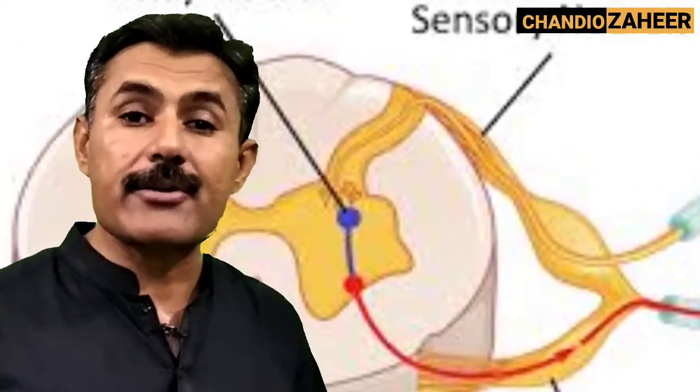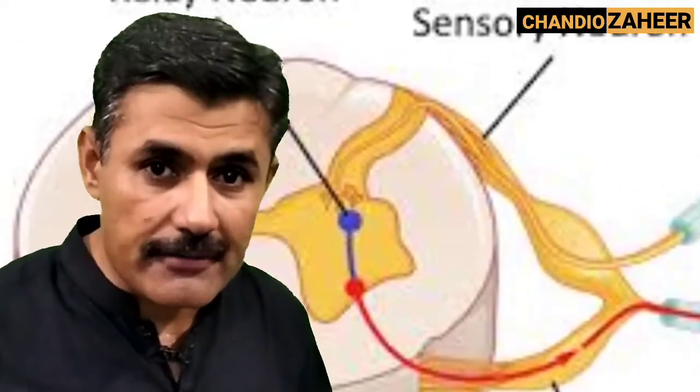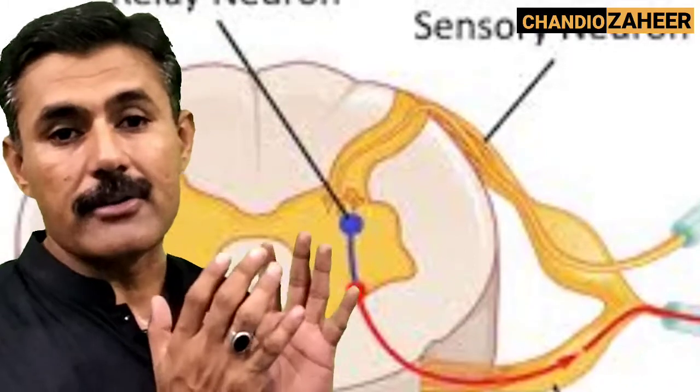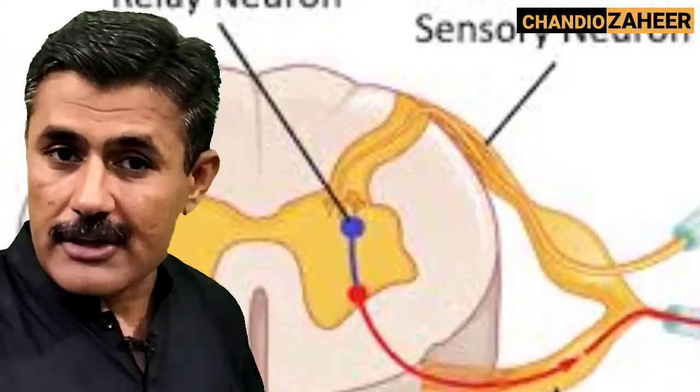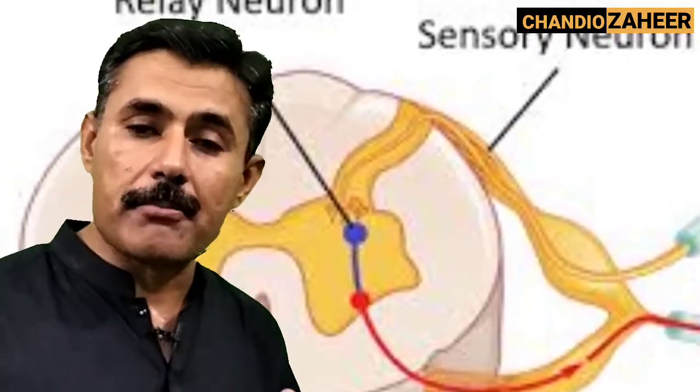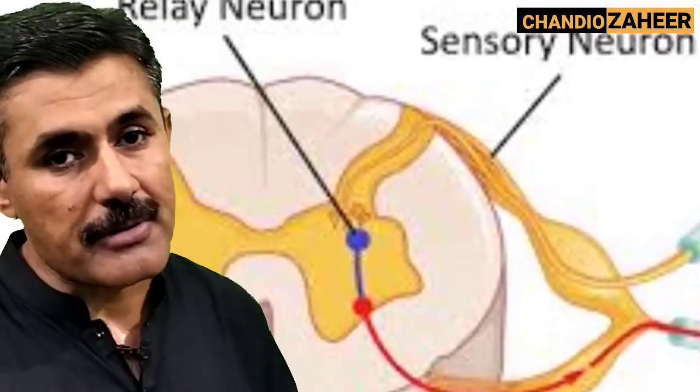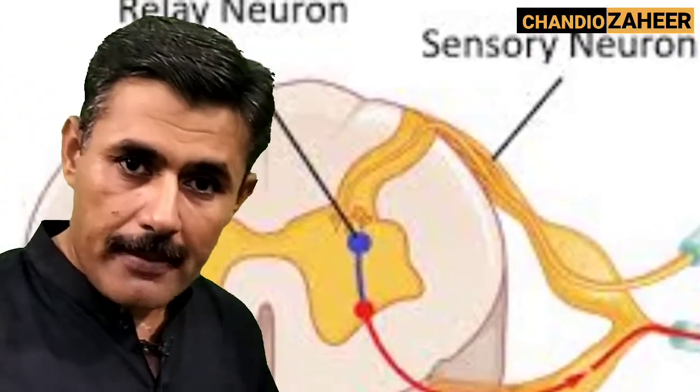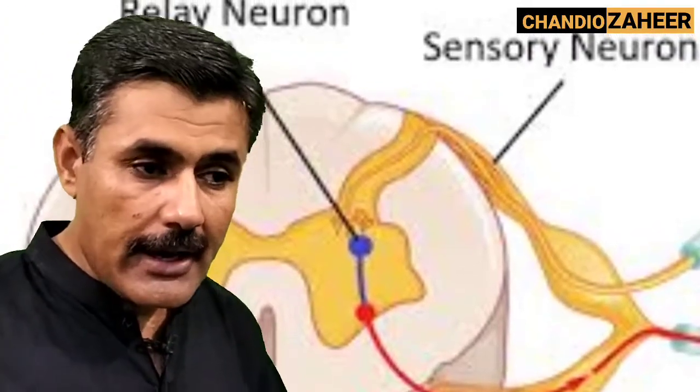Inter-neurons or relay neurons are another kind of neuron that are present in the brain and central nervous system, and they are important to relay information from one part to another part.